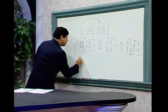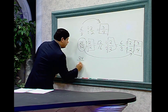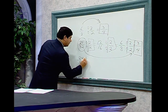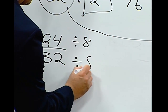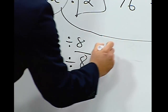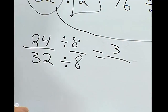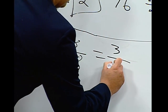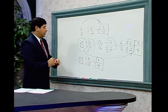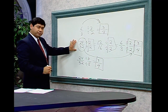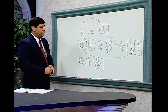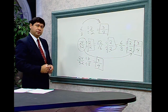We could have divided 24 over 32 directly by 8. Let's try that. 24 divided by 8 is equal to 3, and 32 divided by 8 is equal to 4. This shows that if we divide our initial fraction by the greatest common factor — in this case 8 — we still end up with the fraction reduced to lowest terms.